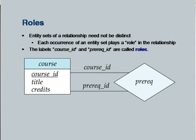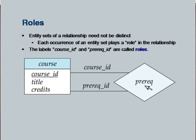A relationship can be linked to the same entity set more than once, and the different aspects are modeled using role names. For example, a course can have prerequisites: the relationship 'prereq' is between two courses, where one course identified by 'prereq_id' is a prerequisite for the other identified by 'course_id'. This is a simple example where roles are important.